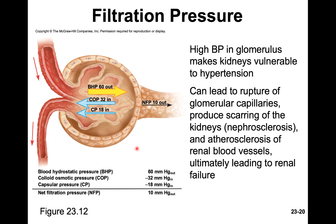Sticking with the glomerulus, let's look at a bit of math — this is about the only math in this entire PowerPoint, and it's all about pressure. When blood enters through the afferent arteriole, it comes in with a certain pressure. That pressure is called the BHP — blood hydrostatic pressure — and it should be the highest pressure in the entire structure. Because you have a tight-fitting capsule surrounding it, there is also pressure pushing back in. One of those is the CP — capsular pressure — the pressure put onto the glomerulus by this tight-fitting capsule.